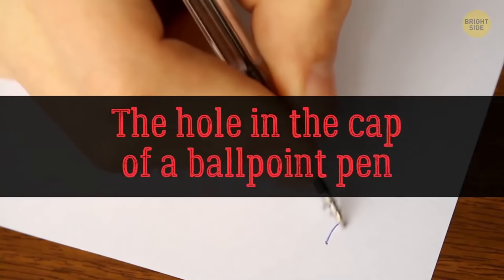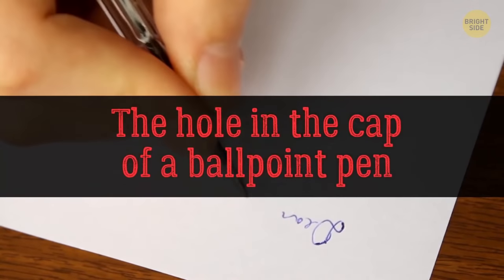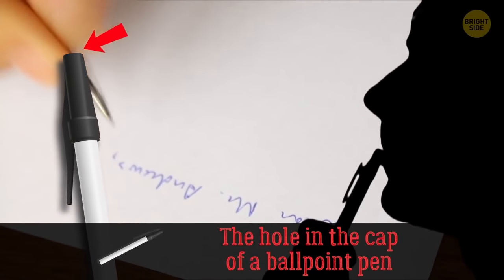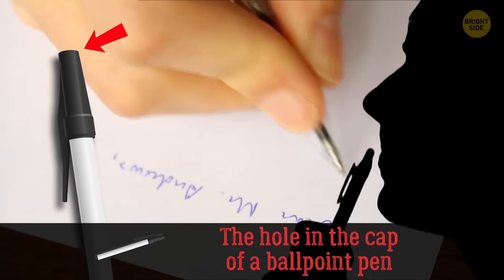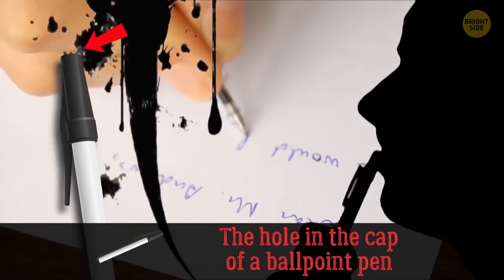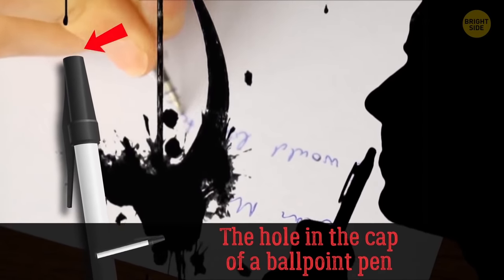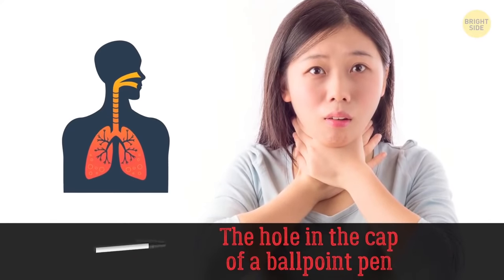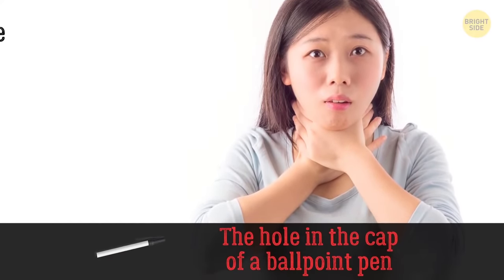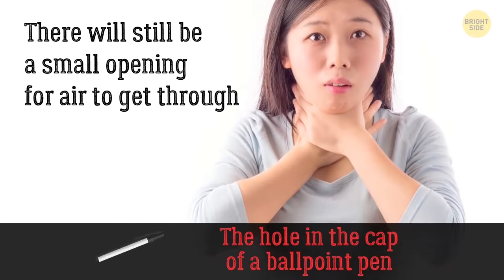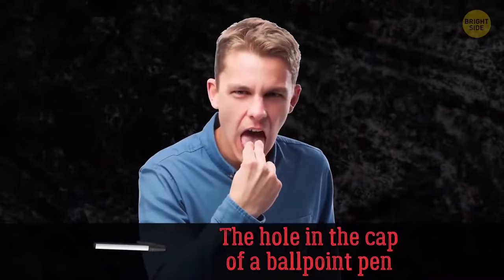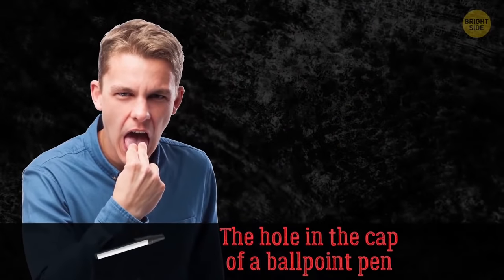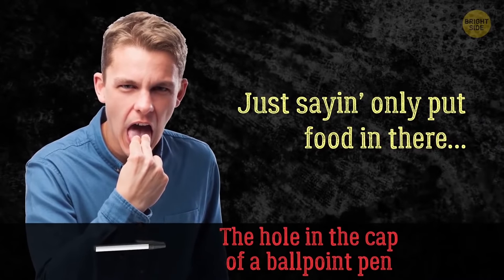Most people assume that the tiny hole on the tip of a pen cap is there to even out the pressure so that the pen doesn't leak. Good guess, but the real reason is much more serious. If a person accidentally swallows the cap and chokes on it, their airway won't be completely obstructed. There will still be a small opening for air to get through. Have you noticed a lot of things where people are sticking the wrong things in their mouths? Just saying, only put food in there. Pen caps are not dessert.